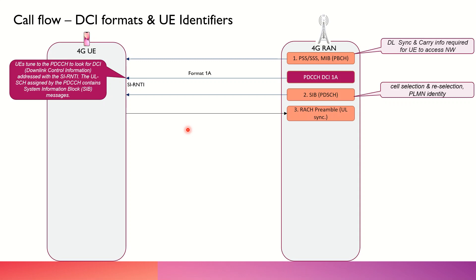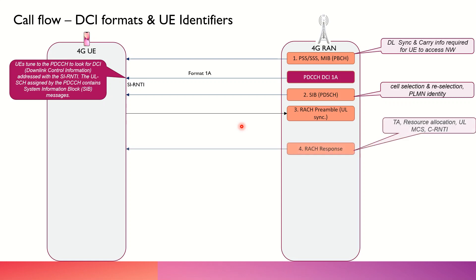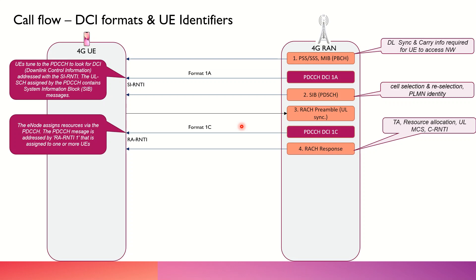Similarly, there are certain other messages. Taking a few more examples: in the uplink synchronization, there is a RACH and there is a response going back from the base station to the UE. In between that also, there is a PDCCH DCI format which is transacting from the base station to the UE, and again there is a temporary ID associated related to the random access in this particular case.